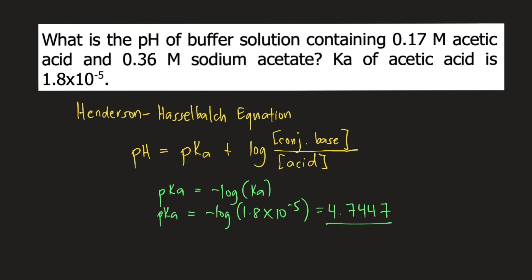So this is the pKa of acetic acid. Now going back to the Henderson-Hasselbalch equation, pH is equal to 4.7447 plus log...